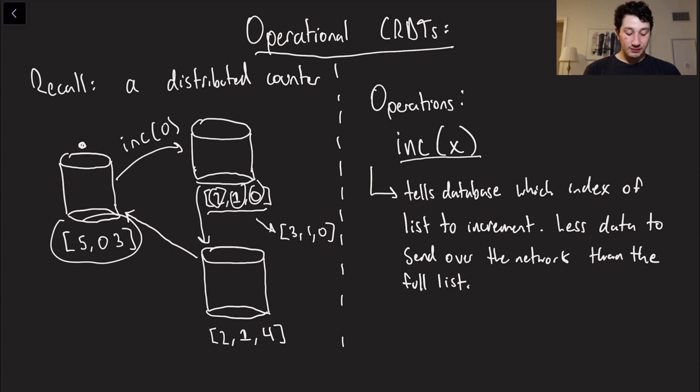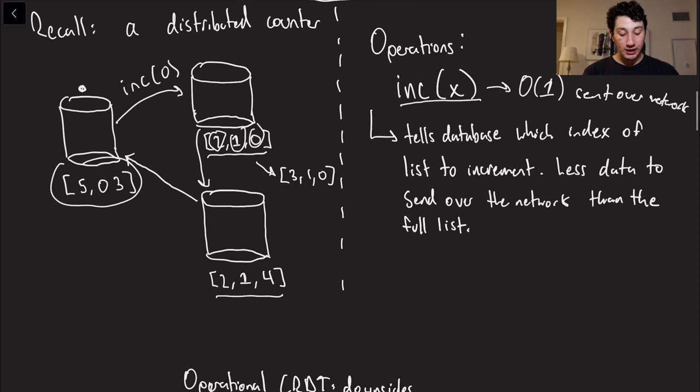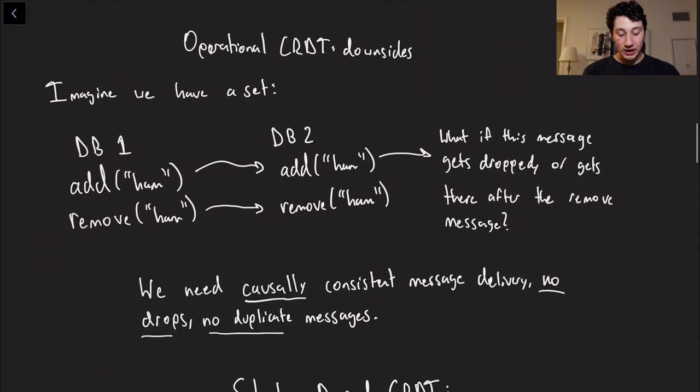So basically, in this case, again, increment just tells the database which index to increment, and the advantage of something like an operational CRDT is that you don't actually have to send this full vector, which grows linearly with respect to the number of nodes, but rather you can just send one operation, and this is O(1) in terms of space sent over the network.